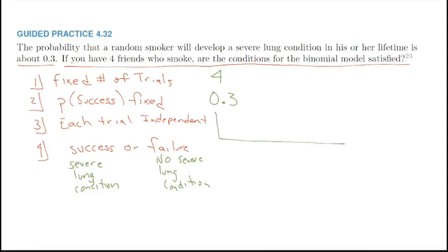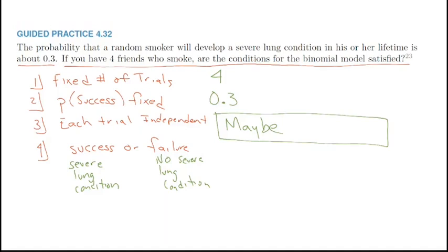This is where things can get sketchy regarding independence. If two of your friends live together or are friends with each other, they can smoke together and have more exposure than if they weren't connected. So independence is a 'maybe.' We're going to assume each trial is independent unless told otherwise, but note that assumption.